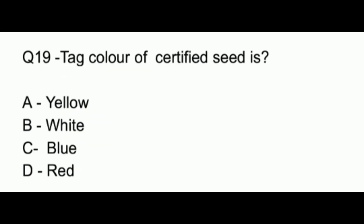Question number 19. The tag color of certified seed is: option A, yellow; option B, white; option C, blue; option D, red. The answer to this question is option C, which is blue.